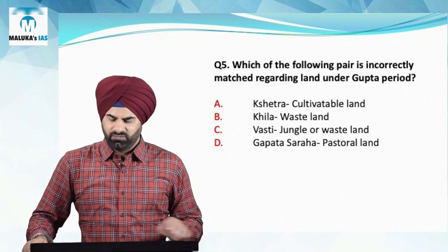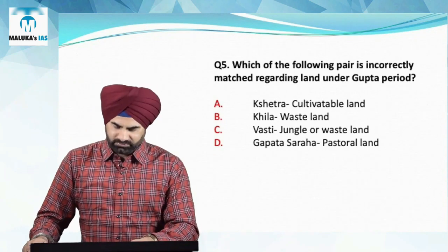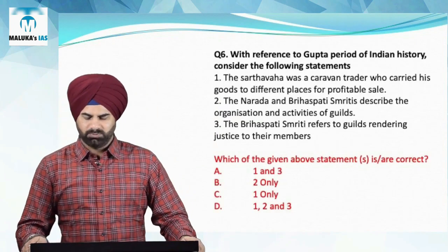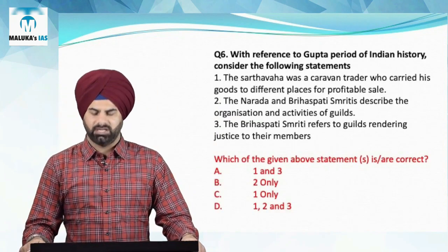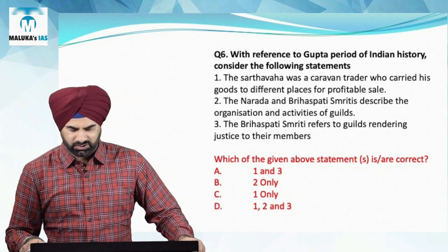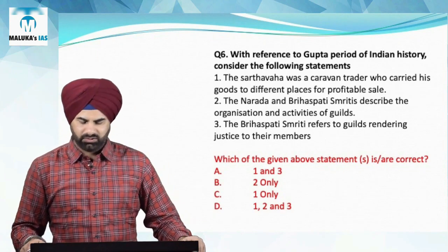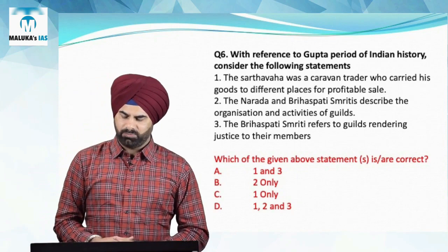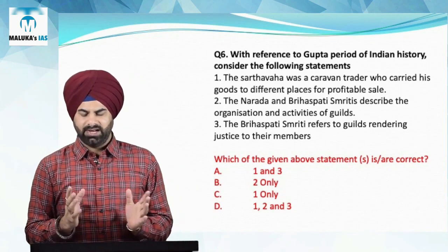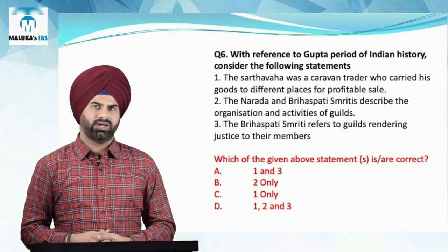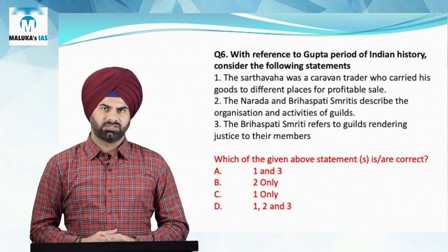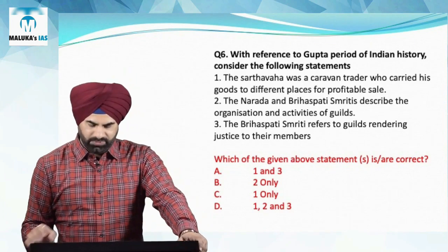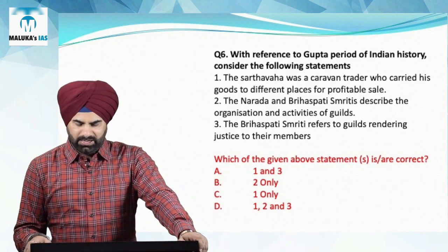The fourth statement — Guptasraha is a pestle land — is right. Therefore for question number five, C becomes the answer, where Vasti means habitable land. Question number six: with reference to the Gupta period, the first statement says Sarthavaha was a caravan trader who carried goods to different places for profit. The guild system was important for trade, and the head of the guild was referred to as Sarthavaha.